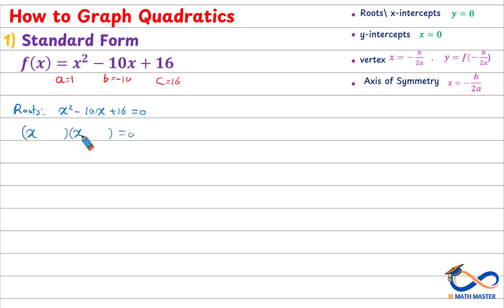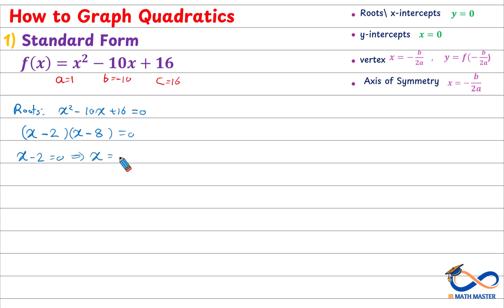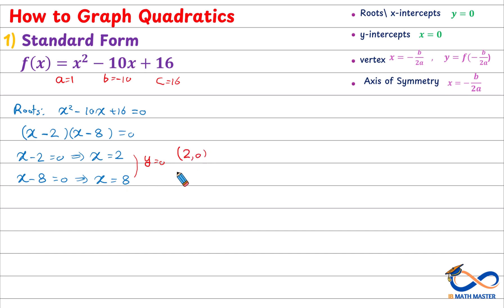We write x times x and need two numbers that add up to negative 10 and multiply to 16. They will be negative 2 and negative 8. Since the product equals zero, either x minus 2 equals zero or x minus 8 equals zero. If x minus 2 is zero, then x will be positive 2. And if x minus 8 is zero, then the second root will be positive 8. So the two roots are 2 and 8, and at both roots y is always zero. The first root is (2, 0) and the second root is (8, 0).